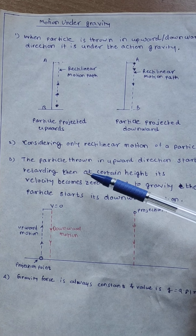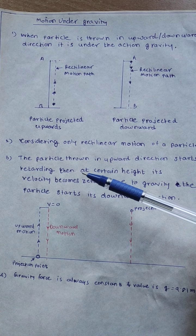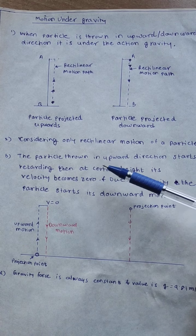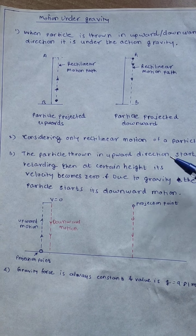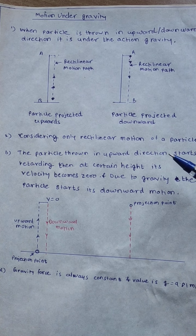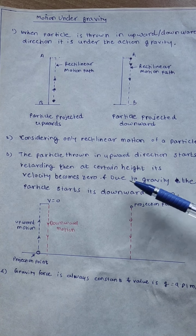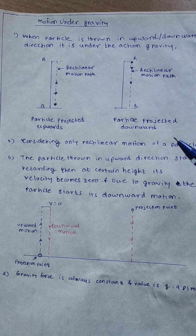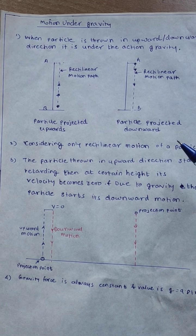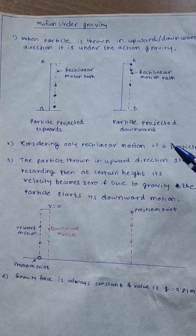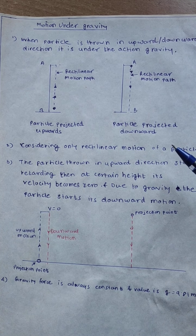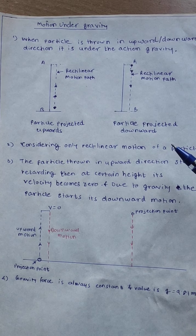Then the next part: when the particle is thrown in upward direction, it starts retarding. Then at a certain height, its velocity becomes zero. And due to gravity, the particle starts its downward motion again.